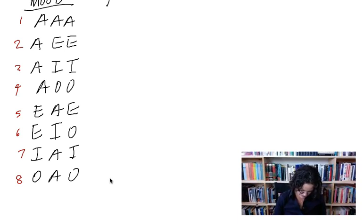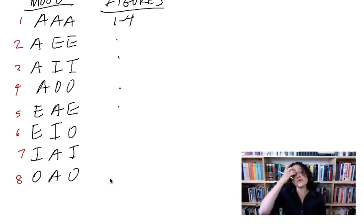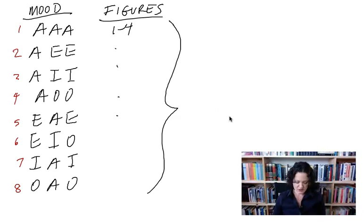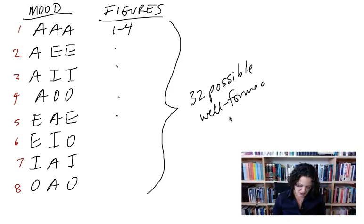Here's our mood. And now, we have figures for each. One through four in each of these. So, that will get us 32 possibilities. Let me just move that. That will, when we combine these moods, eight moods times four figures,